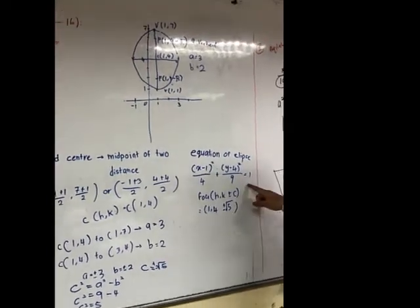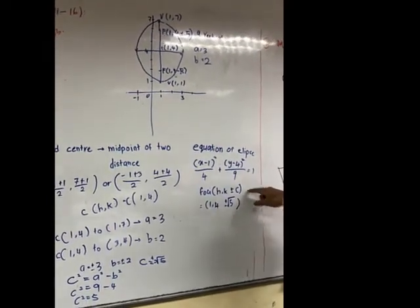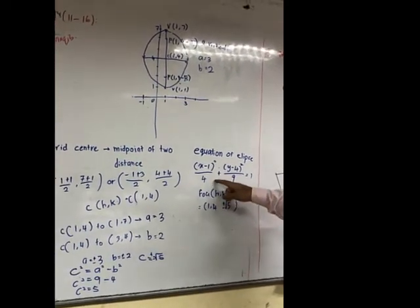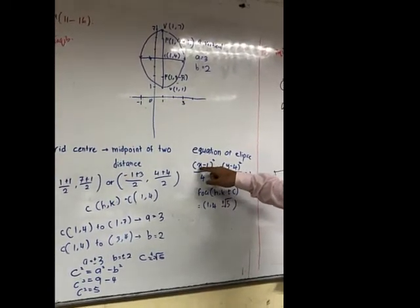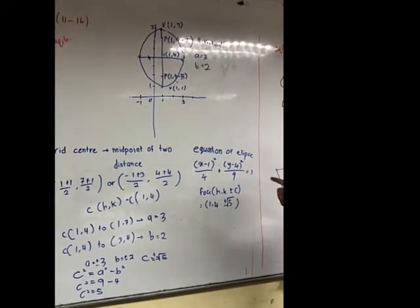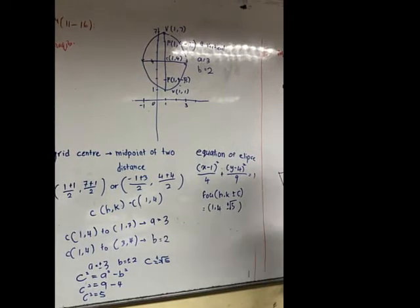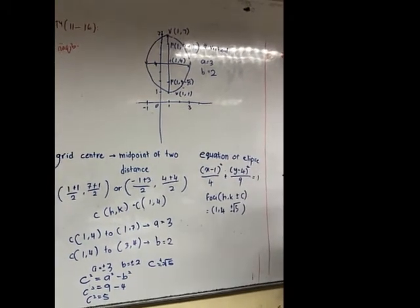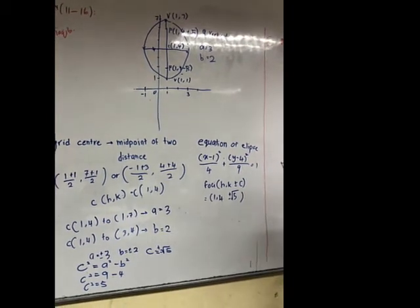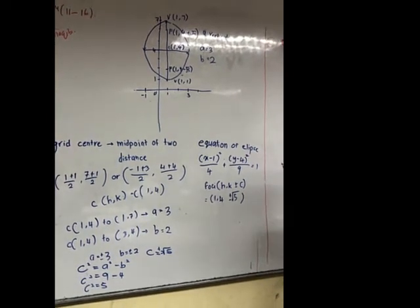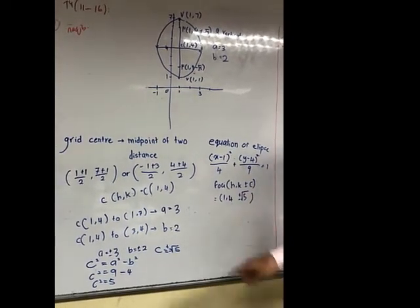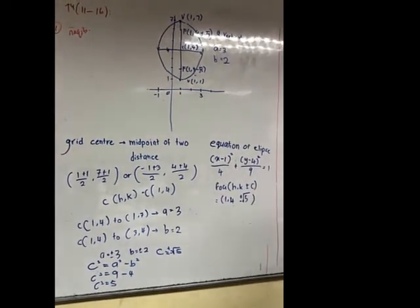So then we get the equation of the ellipse. We get from the center. So (x - 1)²/4 + (y - 4)²/9 = 1.